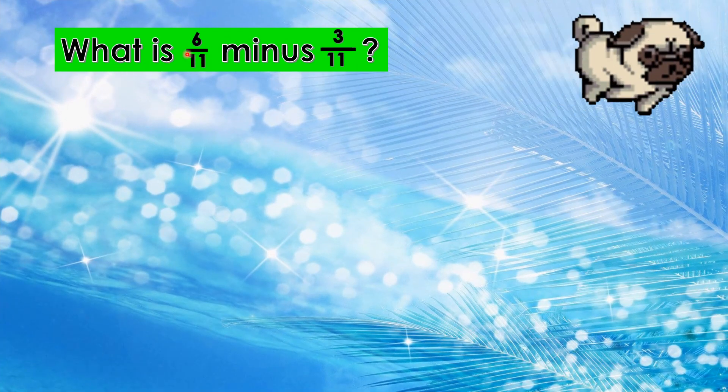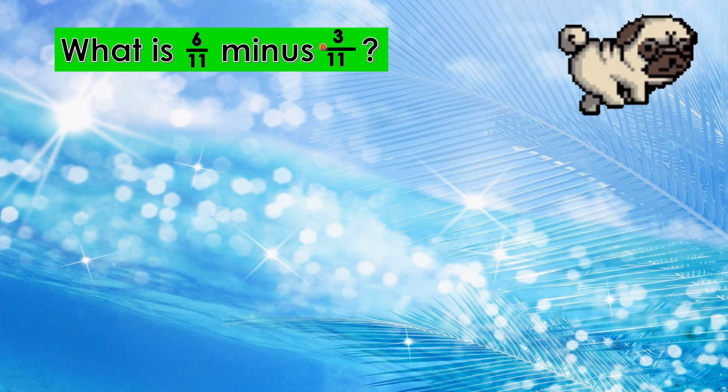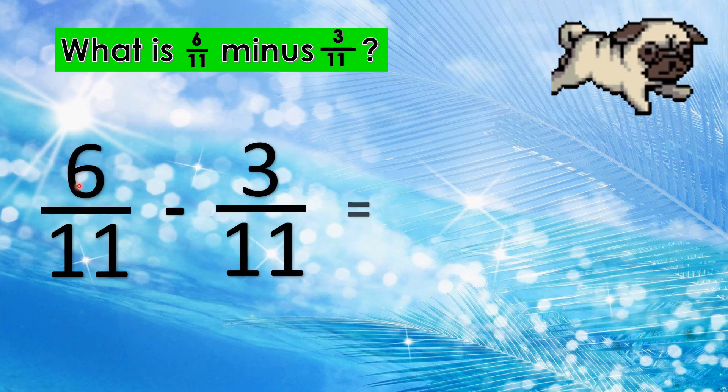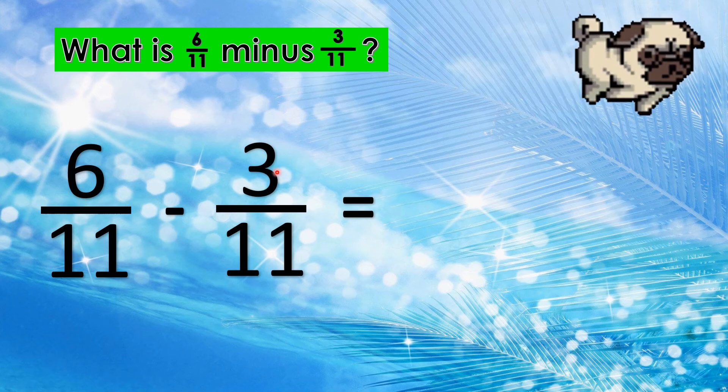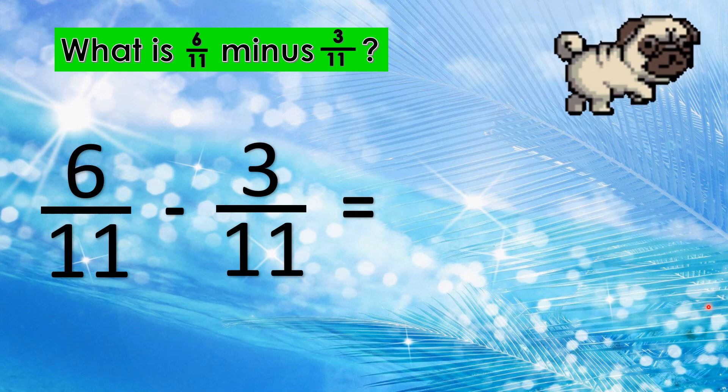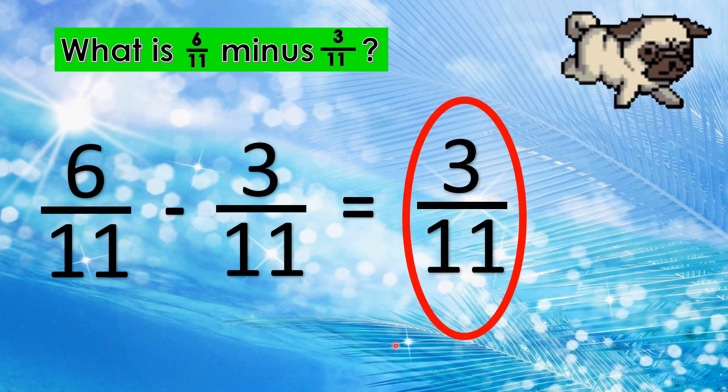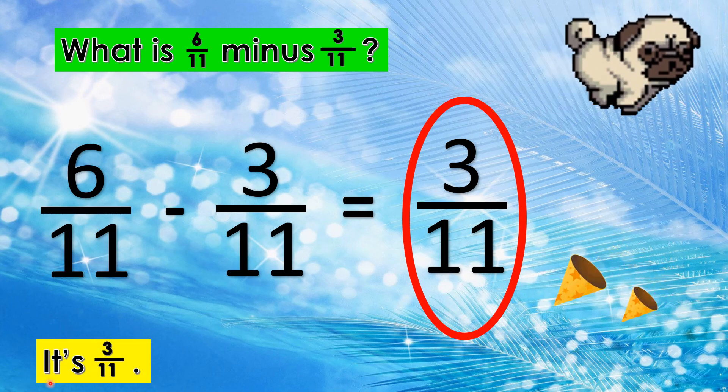What is 6 elevenths minus 3 elevenths? Let's do it. 6 elevenths minus 3 elevenths equals 1, 2, 3. You are good! The answer is it's 3 elevenths.